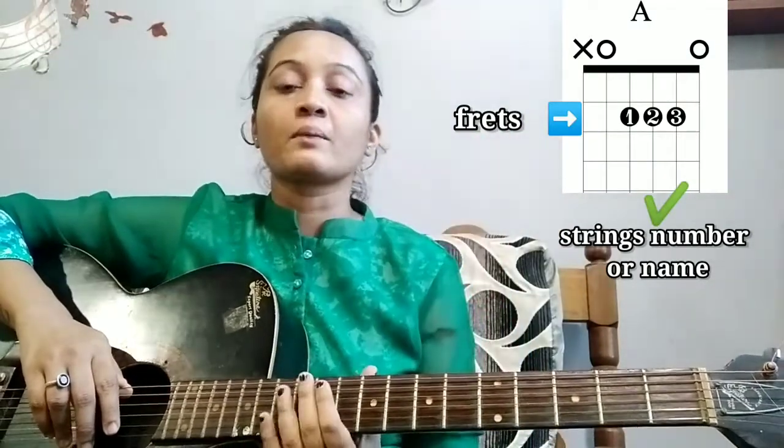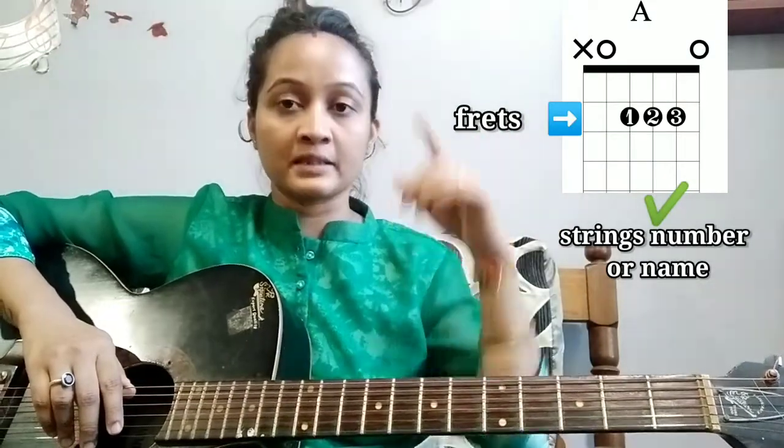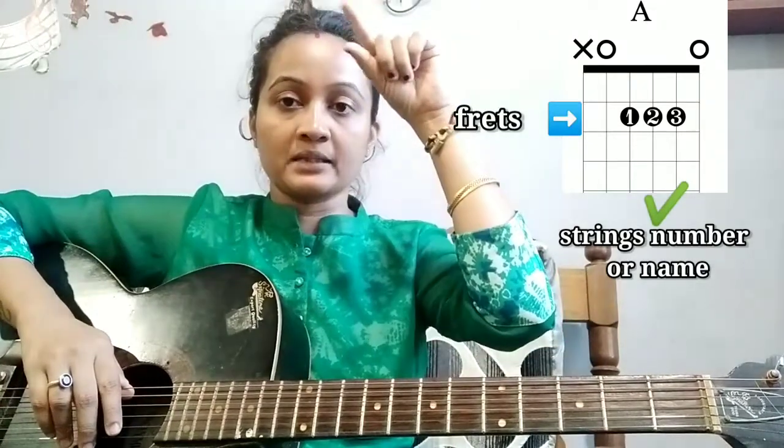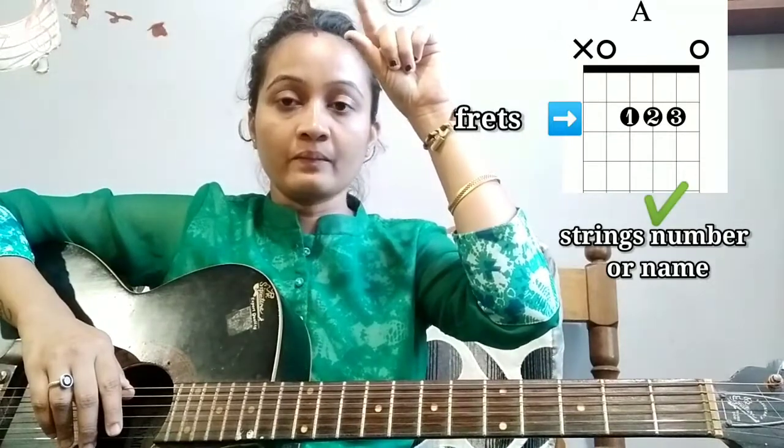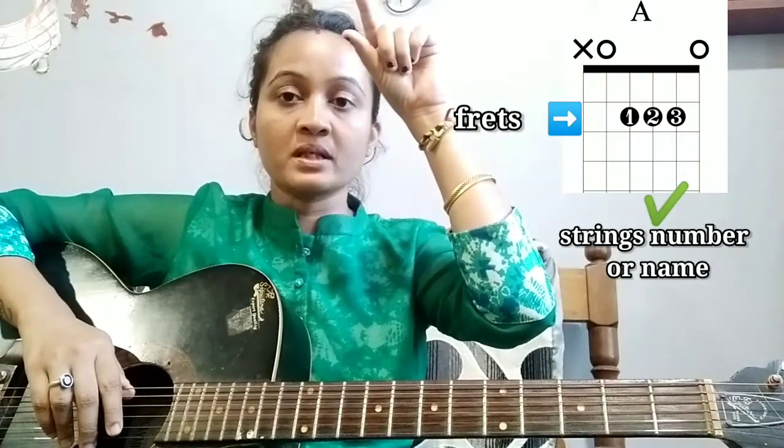In the chord diagram, on the right side, if 0 is written, it means open string. O means it is our open string — open string.